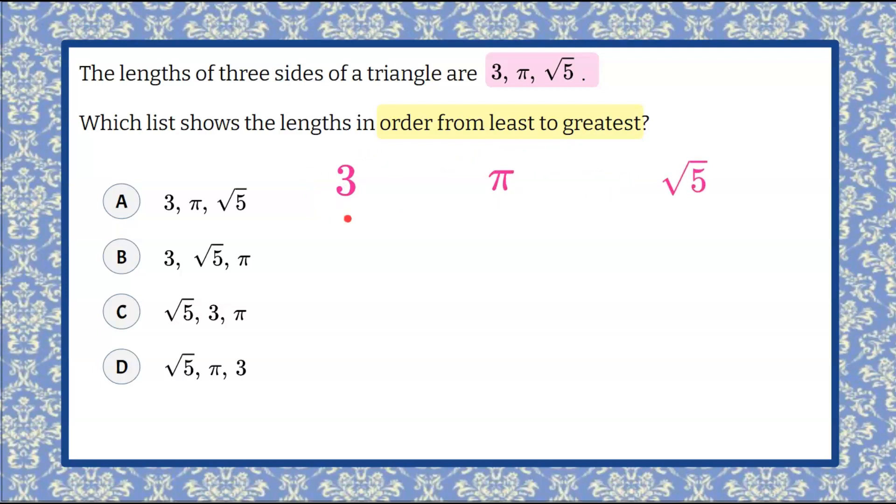So 3 we can pretty much understand what 3 is. Pi we can abbreviate or approximate that to be 3.14.